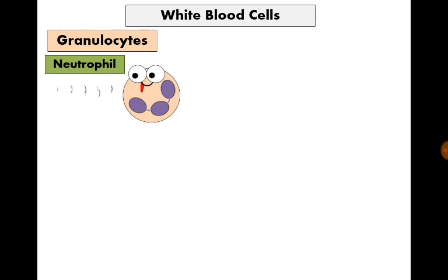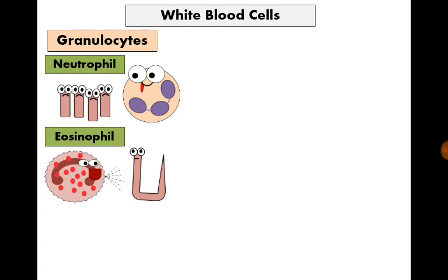Neutrophils are the most important cells combating bacteria, and they are the pus-forming cells. Neutrophils are also one of the phagocytic cells. The second granulocyte is eosinophils. Eosinophils are the most important elements combating worms; they secrete toxic products to digest the body of the worm.